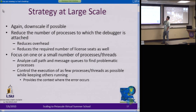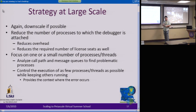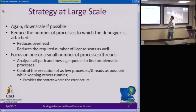First of all, downscale if possible. But if it is impossible, reduce the number of processes that your debugger is attached to — the processes the debugger has to control. So you can have a program running with 1,000 cores but only have your debugger attached to maybe just a few of them. That's possible, and we'll see how to do that with TotalView later on.